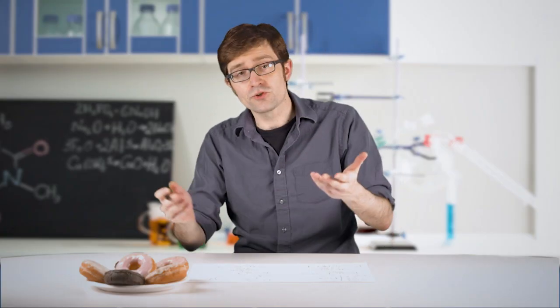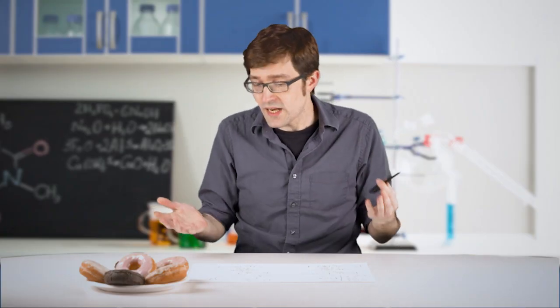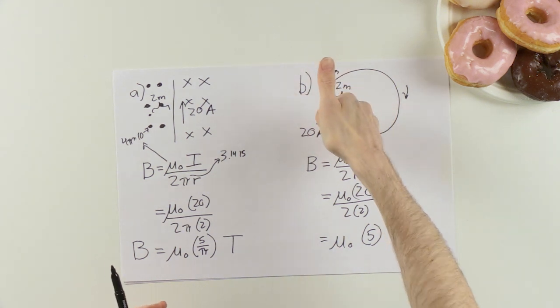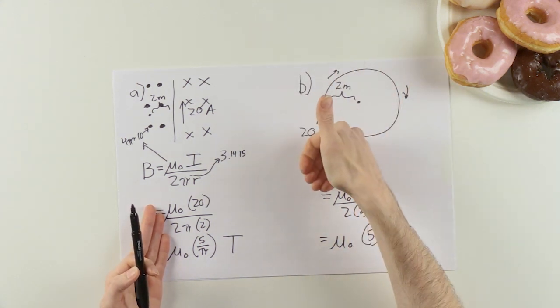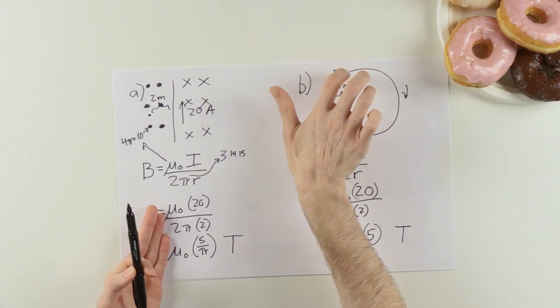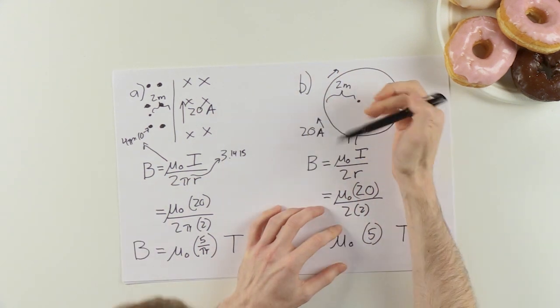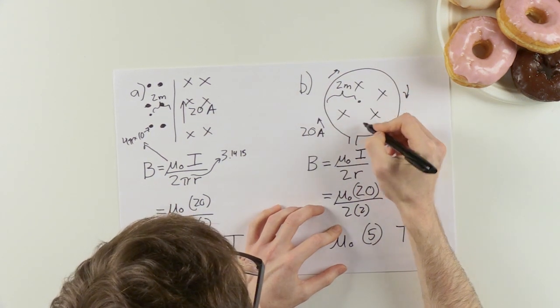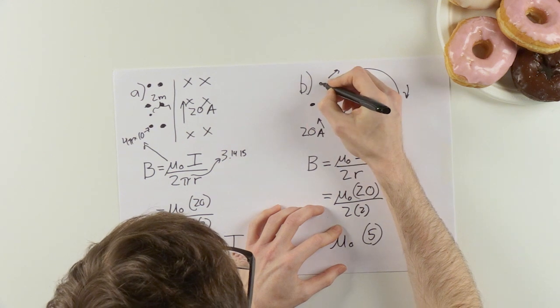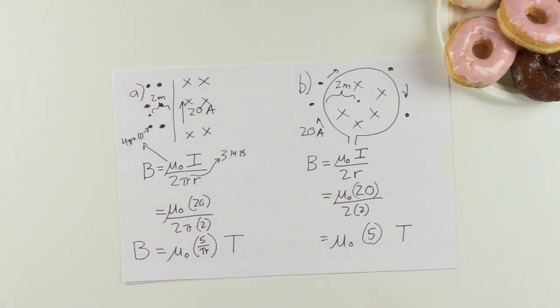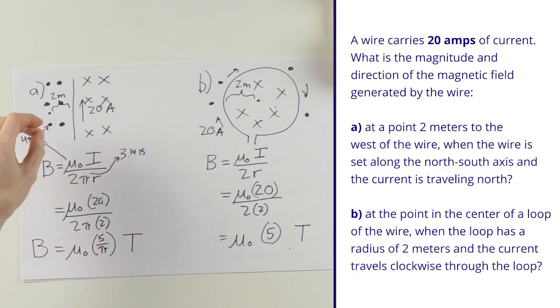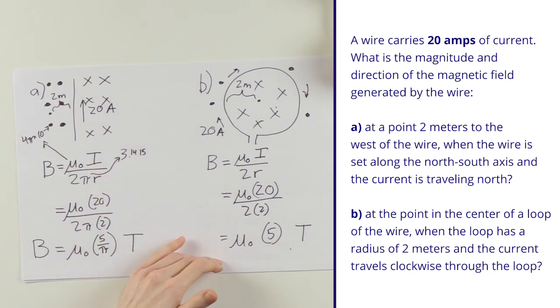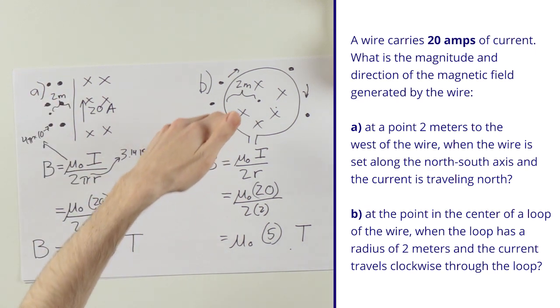Then for part B, what's the direction? For part B it's the same right hand rule. I imagine holding the wire, this time going around in a circle, and my current goes in the direction of my thumb. In this case, my fingers are going into the page, and the X's are on the inside and the big old dots are on the outside. So my final answer is part a: this is my magnitude and my direction is out of the page. Part B: this is my magnitude and the direction is into the page.